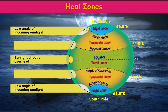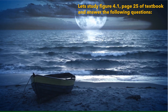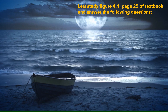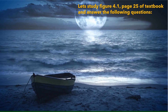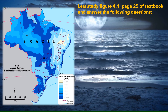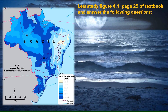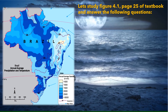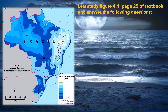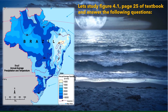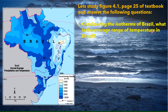The slanting rays also spread over a larger area, reducing heat further. Now that we have a clear picture of the heat zones, let's study Figure 4.1 on page 25 of our textbook, which shows a map of Brazil with the annual average precipitation and temperature.